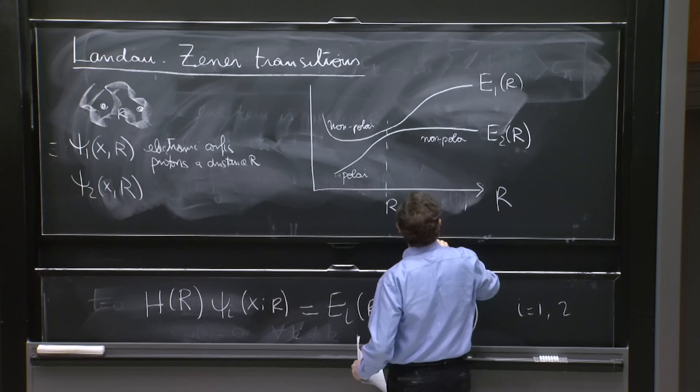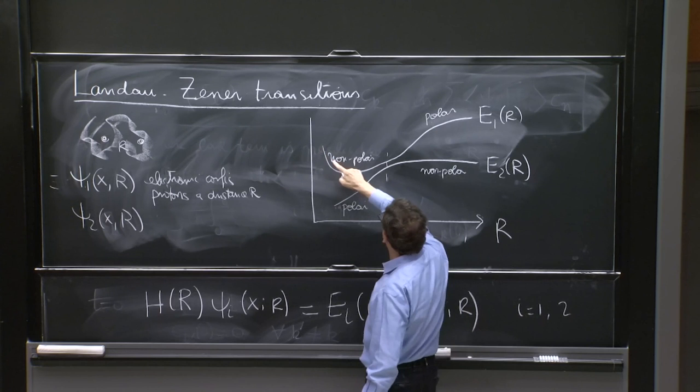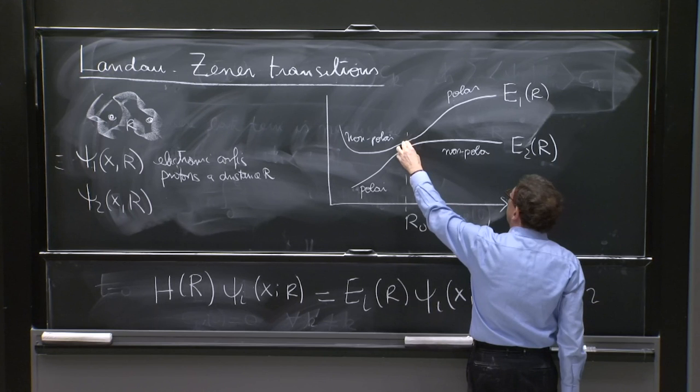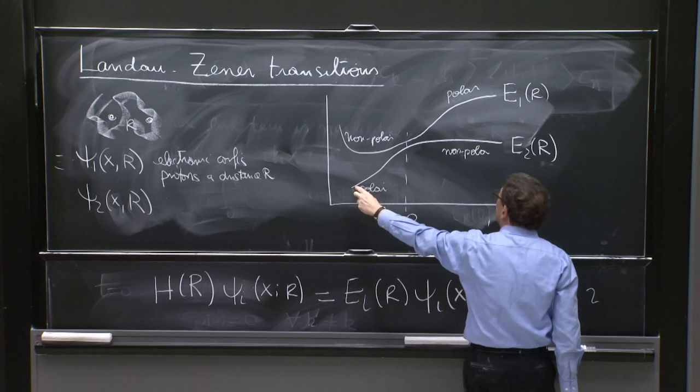For some value of r, this molecule could be a polar molecule. A polar molecule is a molecule that has a permanent dipole moment. It has plus charges and minus charges, not evenly distributed. So you get a dipole. And maybe here, the molecule is nonpolar.